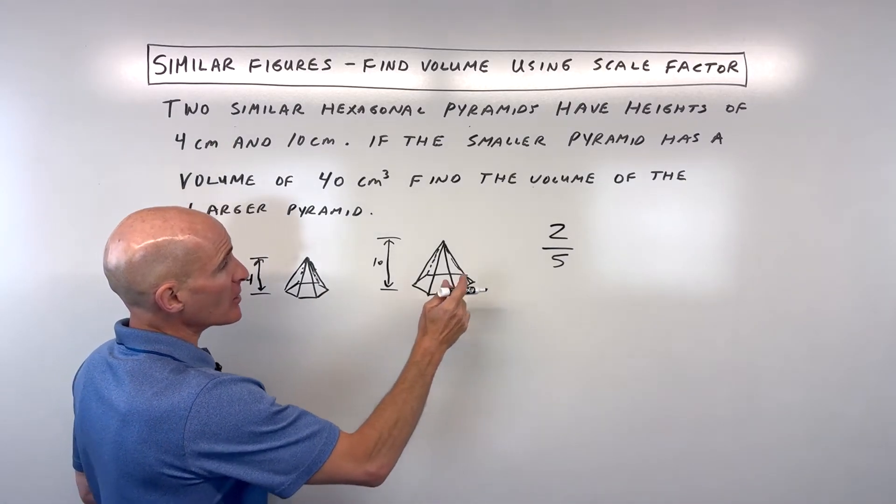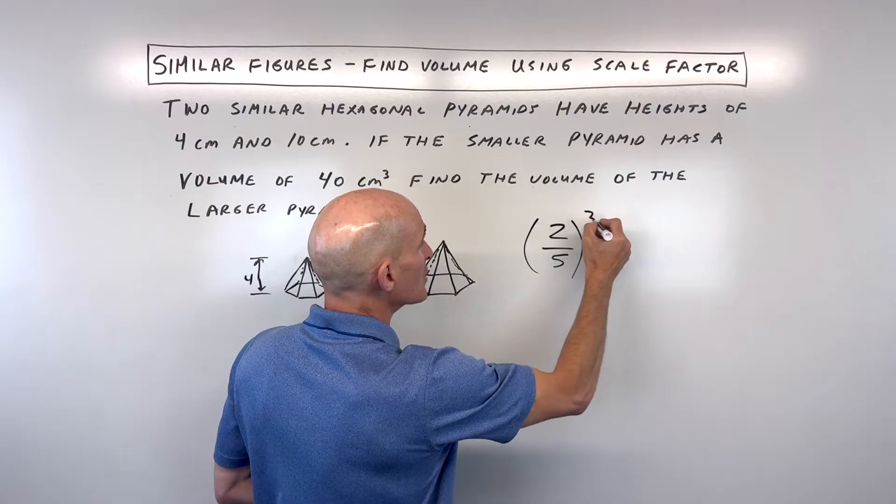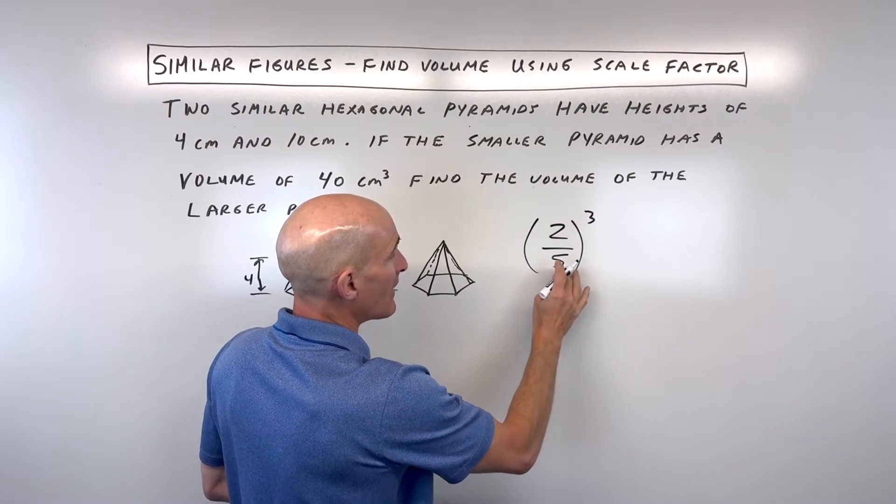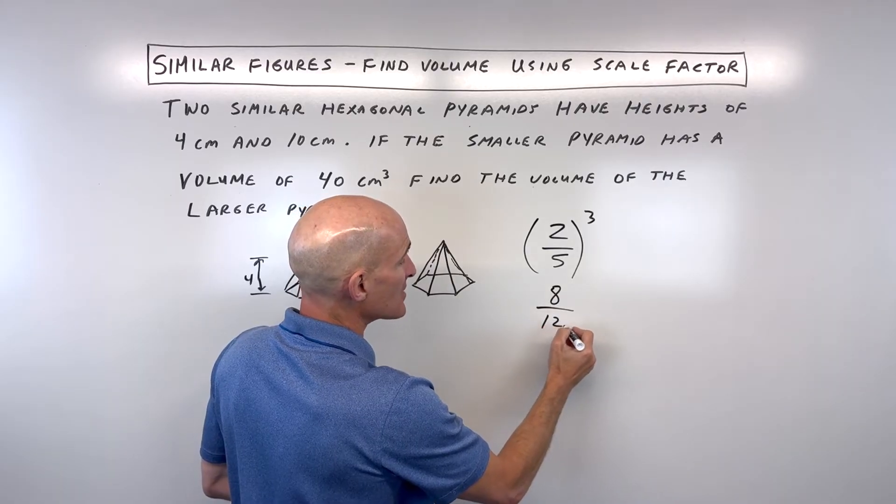But because we're dealing with volume, we're going to take that ratio and cube it. This comes out to 2 cubed, which is 8, and 5 cubed is 5 times 5 times 5, that's 125.